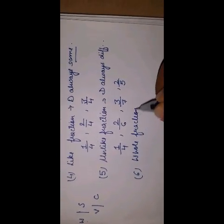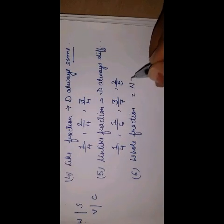Now whole fraction. Whole fraction woh hoti hai jisme numerator denominator ke equal ho jata hai. Jaise maine circle ke 4 parts kiye aur I will give you all 4 parts — total 4 parts mein se 4 mile. Jab aap score karte hain 10 out of 10, that means you got complete marks — because that becomes a whole fraction.